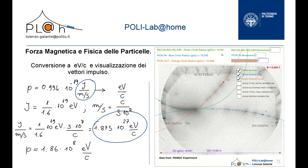Once the average values of the radii have been set, at least to the first figure after the decimal point, we have to fill the empty fields by entering keyboard values. We enter the values of the momenta of the three particles expressed in units of 10⁸ electron volts over c. For instance, if the momentum of the incoming pion turned out to be 1.86 × 10⁸ electron volts over c, we write 1.86 in the field of the incoming pion, the blue one. Note that 10⁸ is implied.